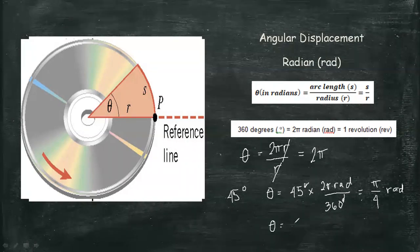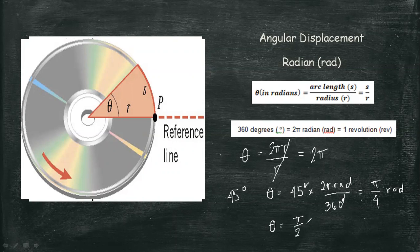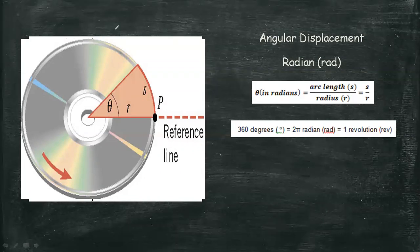But if you want to convert π/4 radians, you multiply it with 360 degrees over 2π radians. Then it will give us 90 degrees.